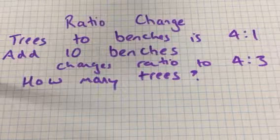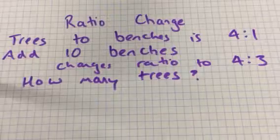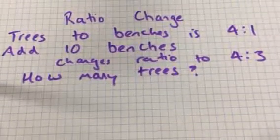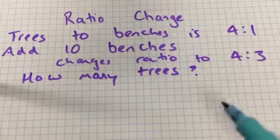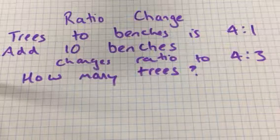We're taking the question from the economist GMAT, and they put an online question, and we're going to show our solution. So the question said, the ratio of trees to benches is 4 to 1, and they add 10 benches, and it changes the ratio to 4 to 3. How many trees are there?